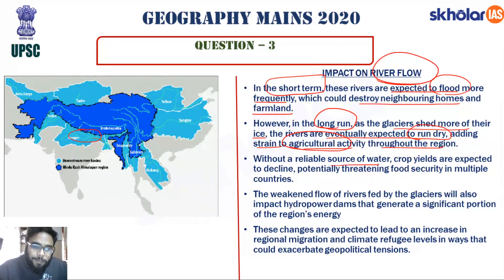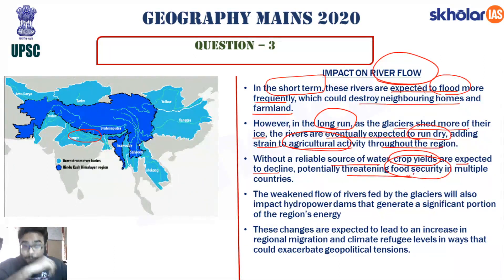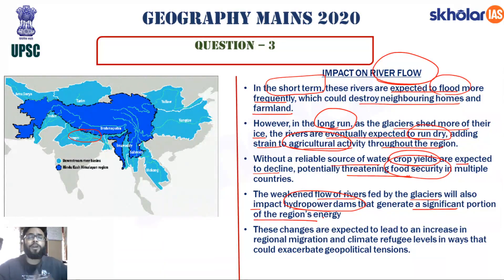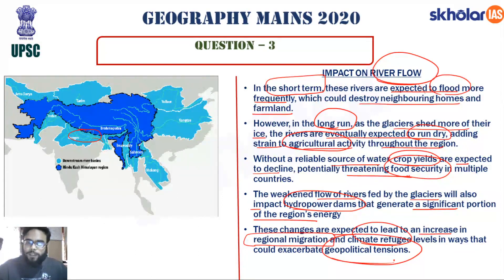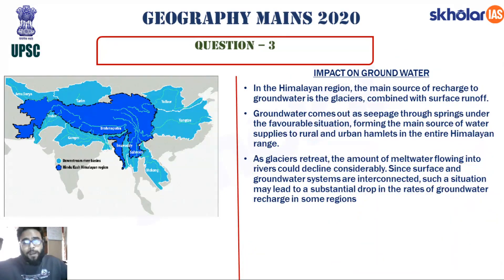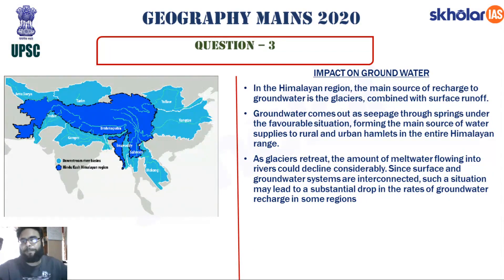Without reliable water, crop yields will decline, threatening food security in India — primarily an agro-based economy. The weakened river flow will also impact hydropower dams, affecting energy security. These changes are expected to lead to increased regional climatic migration, which will further result in geopolitical tensions. In the short term: flooding; in the long term: reduced agricultural, energy, and industrial activity.